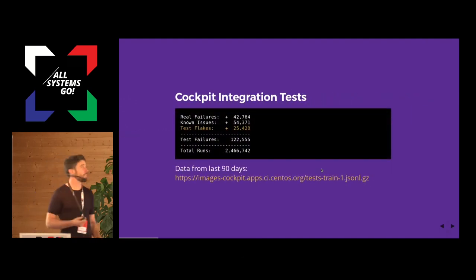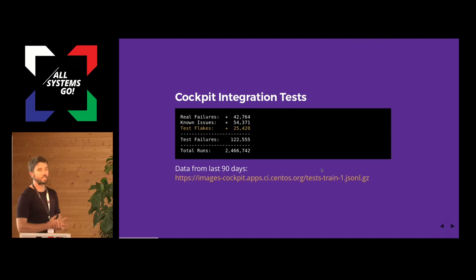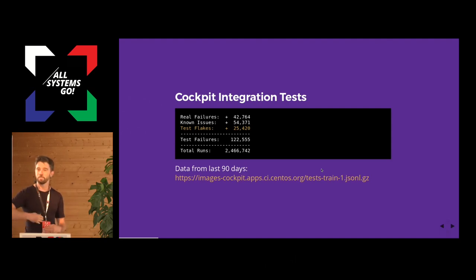Here's some data and stats from the cockpit integration tests. Cockpit does somewhere near 800,000 virtual instances spooled up per month to test the various changes that come into the project. If you open a pull request for anything in the project, about 2,000 virtual machines will be started to test that — and that includes booting Linux, testing some feature, shutting it down, and doing that 2,000 different times.